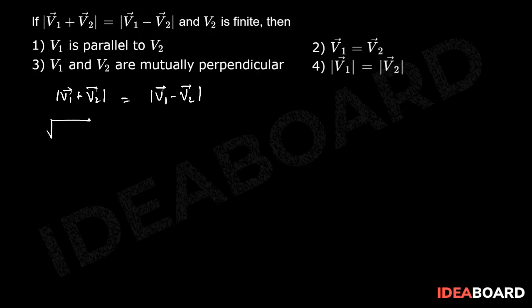We can write this as under root v1 square plus v2 square plus 2 v1 v2 cos theta, where theta represents the angle between v1 and v2, and that will be equal to under root v1 square plus v2 square minus 2 v1 v2 cos theta.